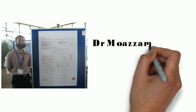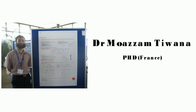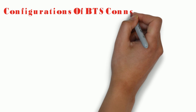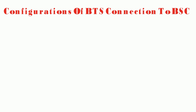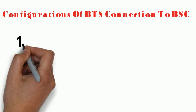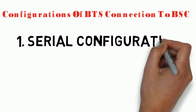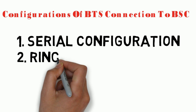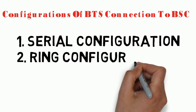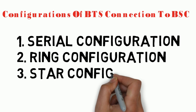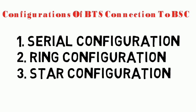Hi, what's up guys, it's Dr. Moazam Tewana here. In today's class we are going to talk about the various configurations in which the base station is connected to the base station controller in the case of a GSM network. When we talk about the connections between the base stations and the BSCs, there are three possible types of configurations: the serial configuration, the ring configuration, and the star configuration. Each of these configurations has certain advantages and disadvantages as we will discuss.